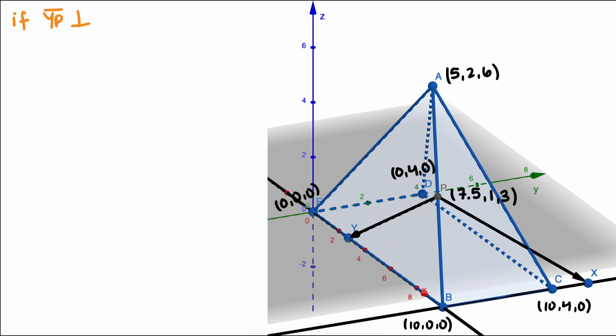If YP and PX are orthogonal to AB, then their dot products must equal zero. We learned this in a previous linear algebra video.